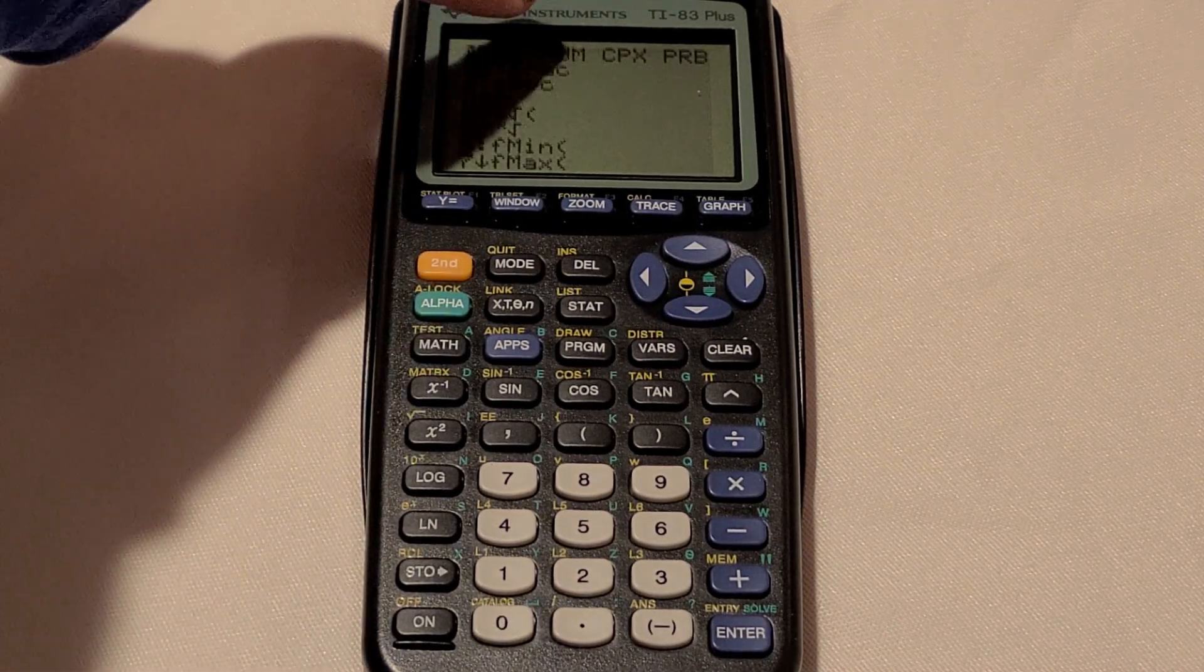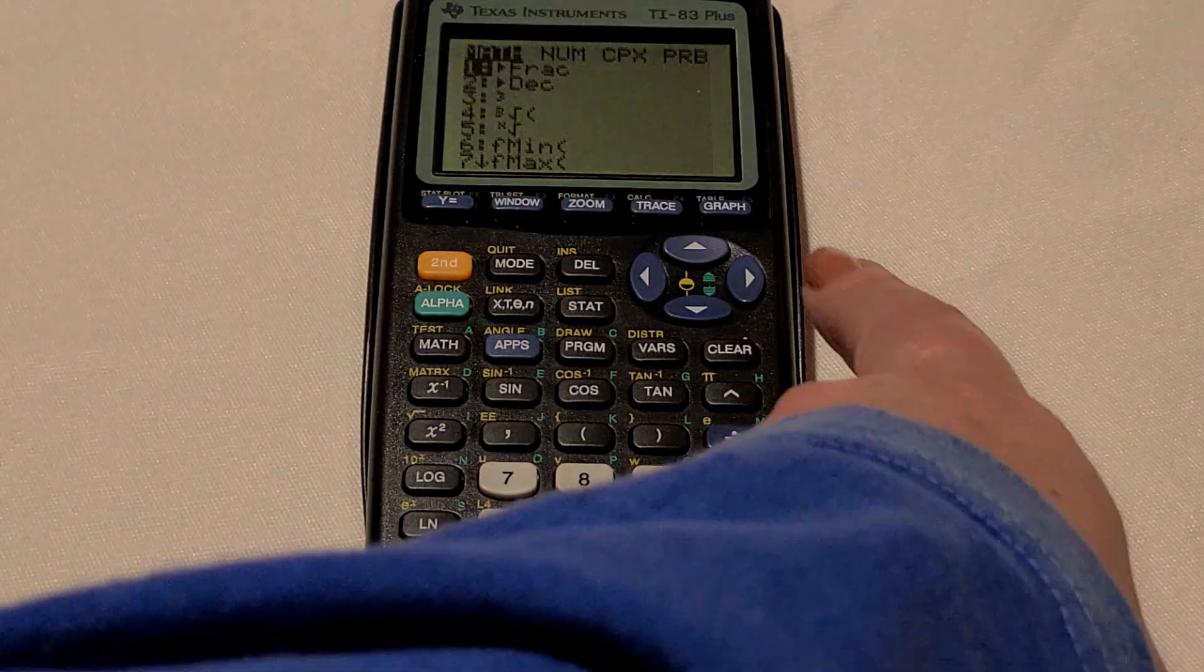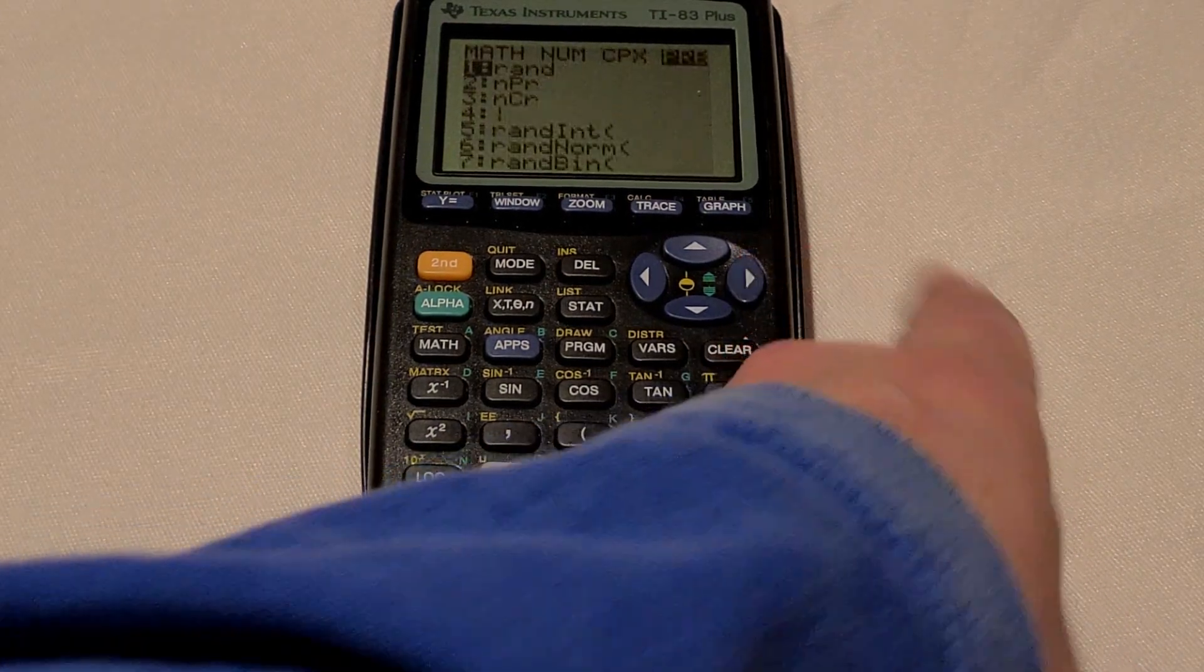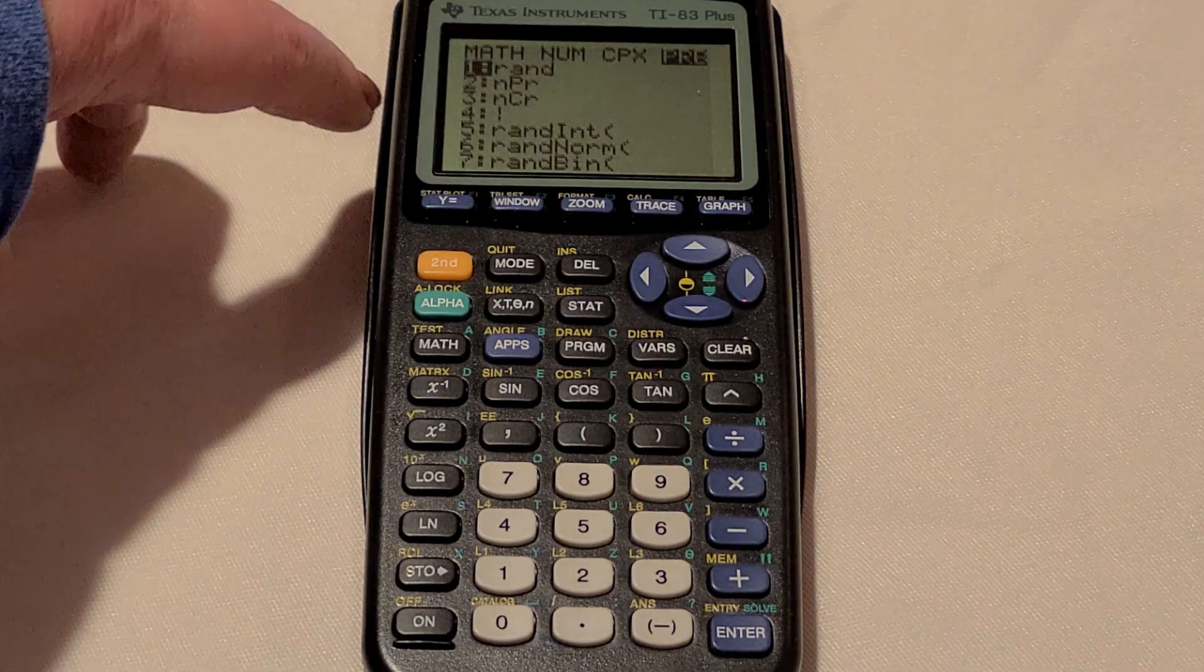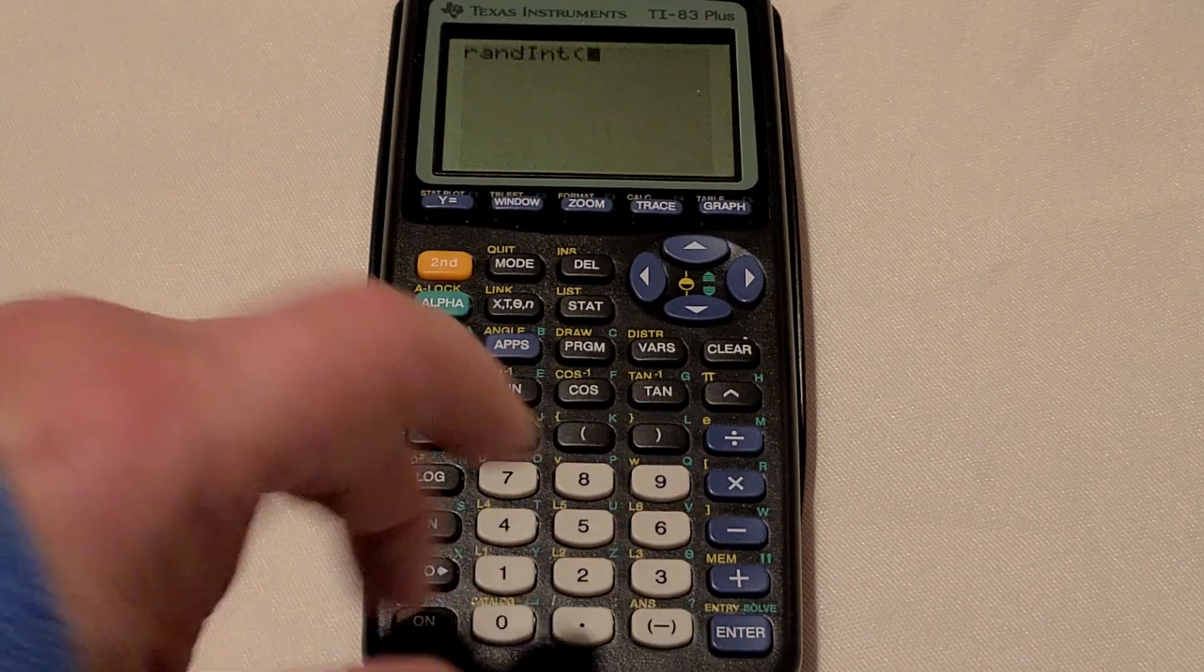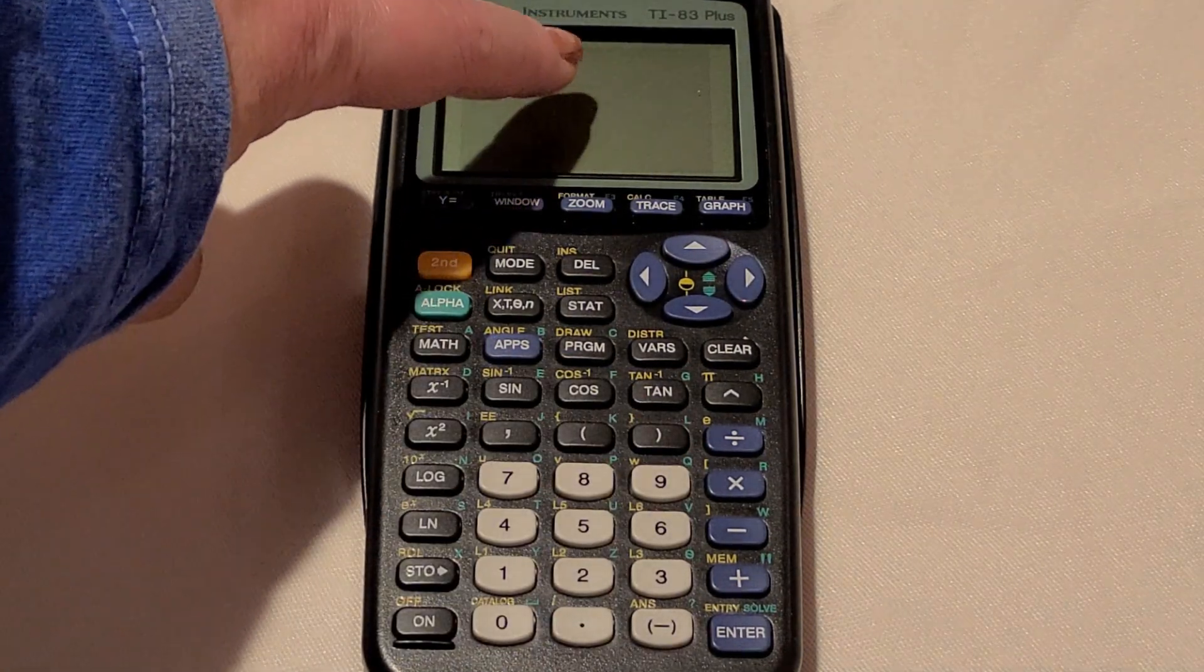And you'll see our choices at the top. We want to get to PRB. So we're going to scroll to the right to get to the PRB. And there's choice 5, the ran int, open parentheses. So we can either hit 5 or we can scroll down.